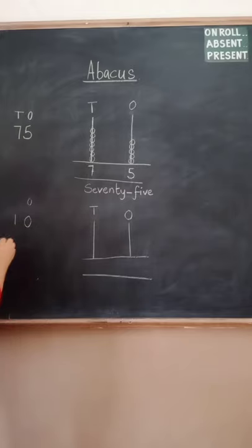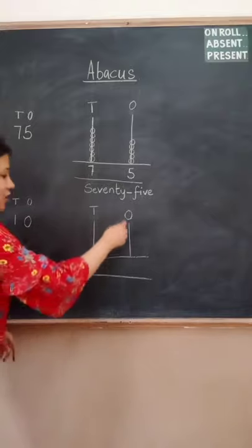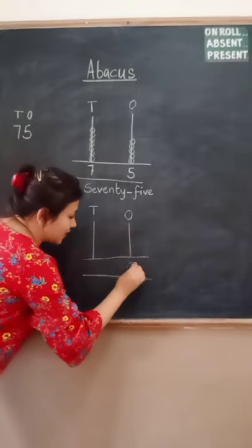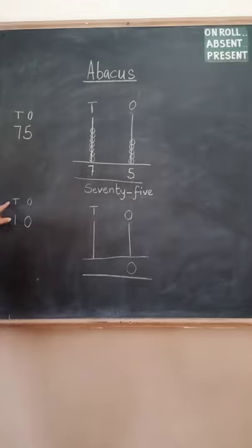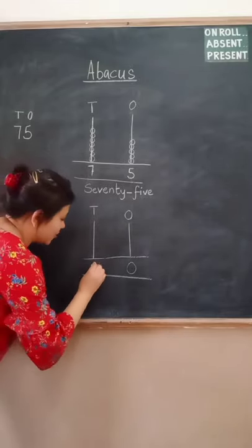Zero comes under ones and one comes under tens. Now below ones is zero. So on the stand of ones we can write zero. Below tens is the digit one. So on the stand of tens we write one.